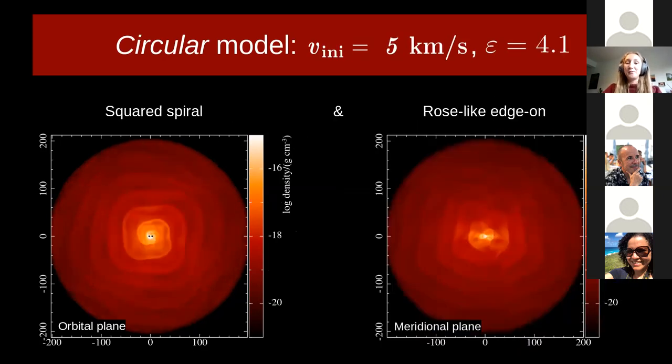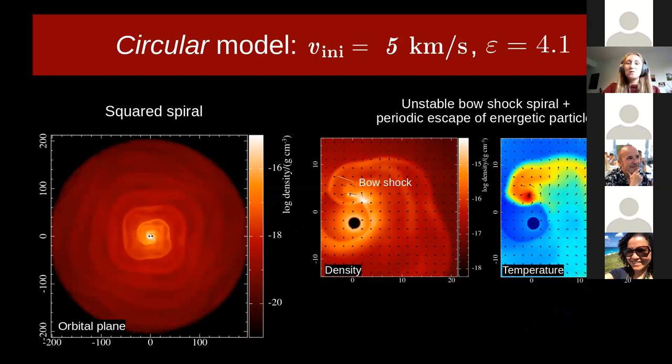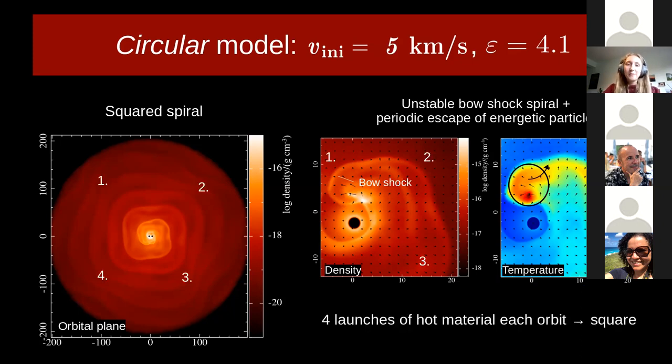When we lower the wind velocity even more, epsilon value again increases since wind companion interaction becomes stronger. Here we see a squared spiral density enhancement with a rose-like edge-on view. This model results in a similar way as the previous one, except that the bow shock is now unstable. That is because more energetic wind particles are gathered around the companion, such that instabilities arise, and this energetic material starts to escape the companion. Through its radial outward movement, these particles pass by the bow shock and transform it. This instability is a periodic behavior, but the cause of this periodicity is still unclear. Specific in this model, energetic material propagates outward about four times each orbital period, and these four directions of these outflows shape the global morphology into the square structure that we see.